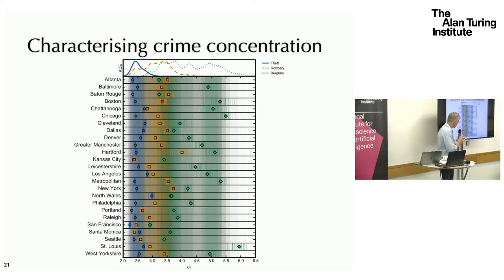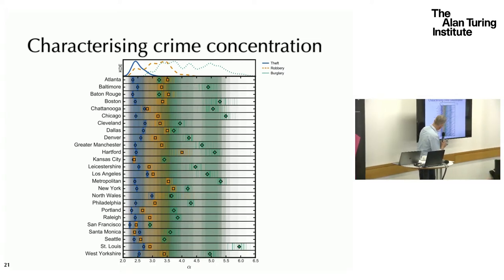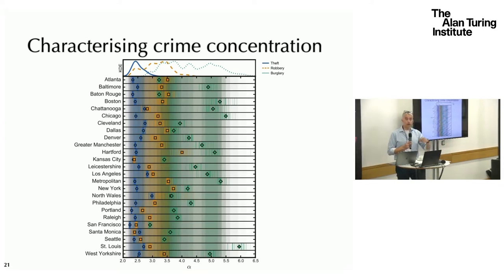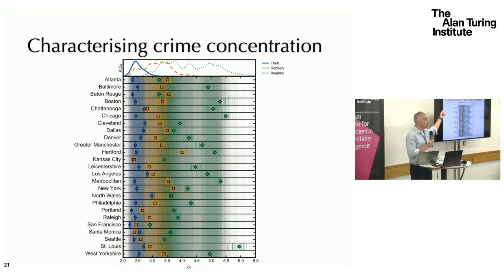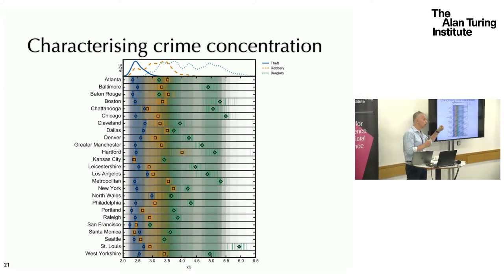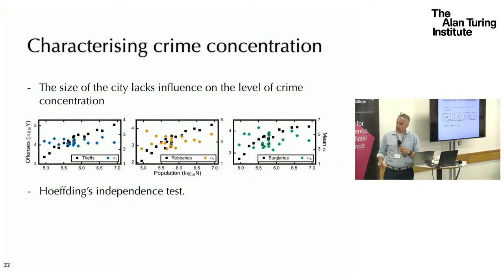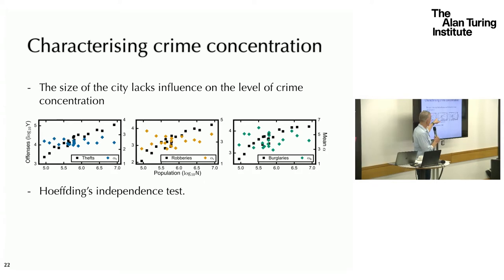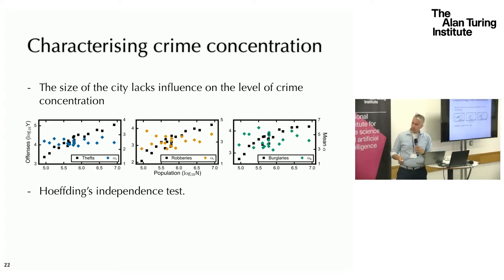This means from the point of view of policymaking that if something worked to reduce crime in San Francisco and I'm the mayor of Seattle, I can probably use that policy as well, rather than just blindly saying I want to reduce crime in London and assuming something that worked in Manchester will also work there — because we don't know if the way crime concentrates in London is the same as in Manchester. This result is independent of population: the exponent characterizing concentration for different cities shows no correlation with population size, and an independence test confirms those two are independent.